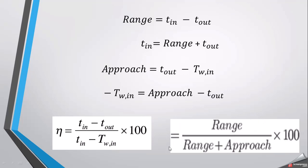This gives the efficiency of the cooling tower. We only need the inlet temperature, outlet temperature, and wet bulb temperature of the air entering the tower. Alternatively, if you know the range and approach, you can use η = range / (range + approach) × 100. The key concept is that it is not possible for a cooling tower to reduce water temperature below the wet bulb temperature of the surrounding atmosphere.